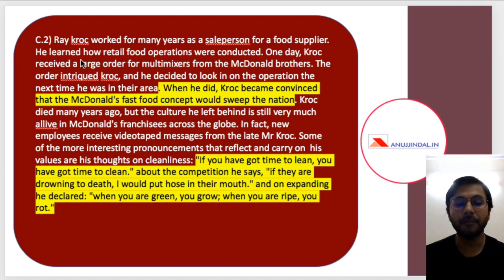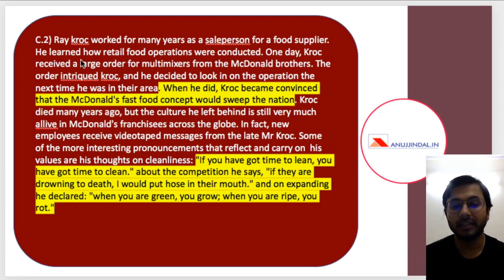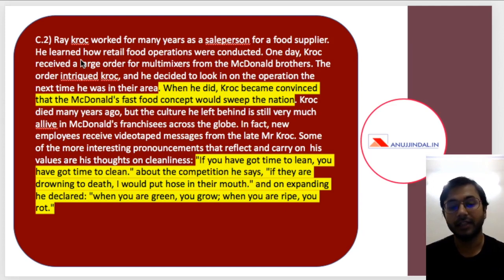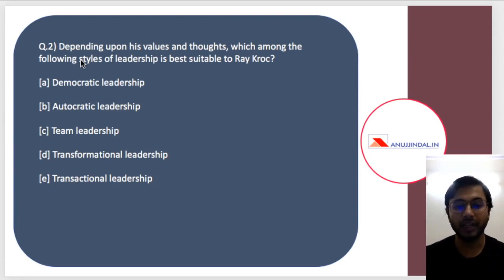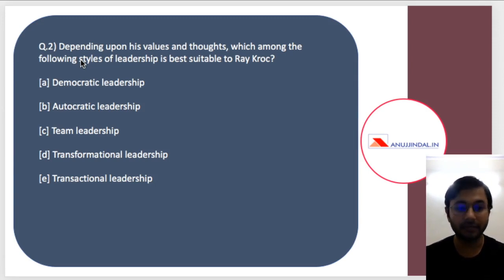When talking about expanding, Kroc declares: 'When you are green you grow, when you are ripe you rot.' This means always stay young and hungry in business — if you feel you have already achieved a lot, you will start rotting. The question is: depending upon his values and thoughts, which style of leadership is best suited to Ray Kroc? He has a very aggressive style of leadership.